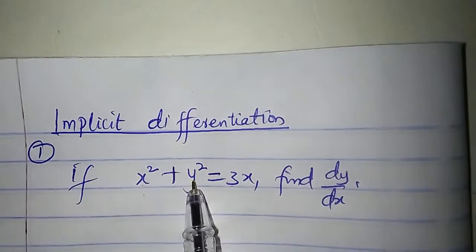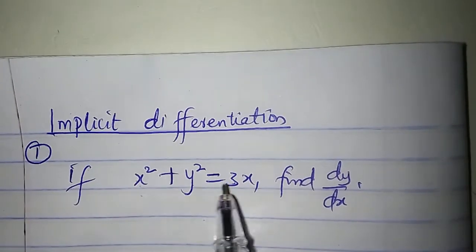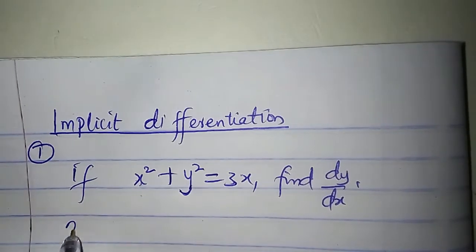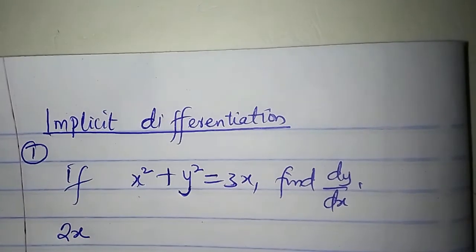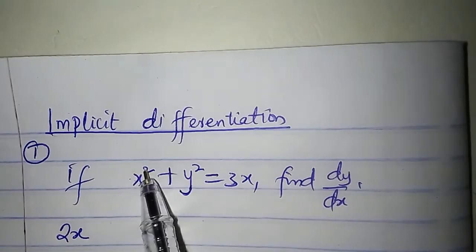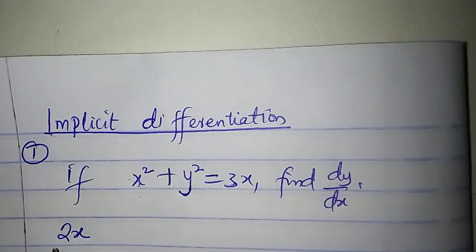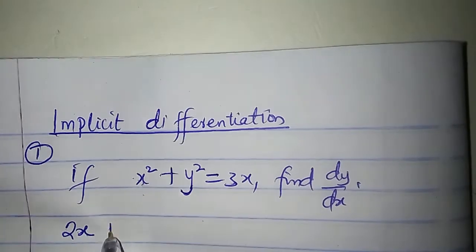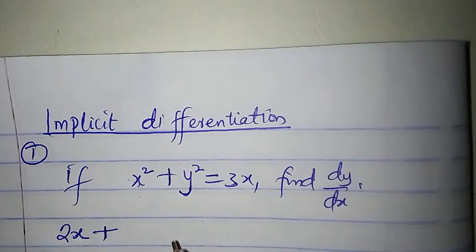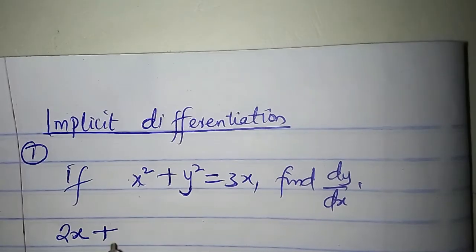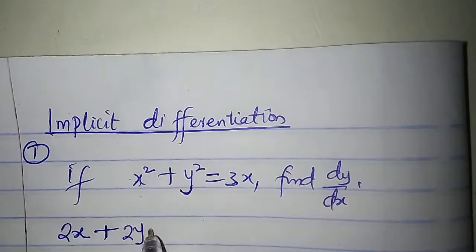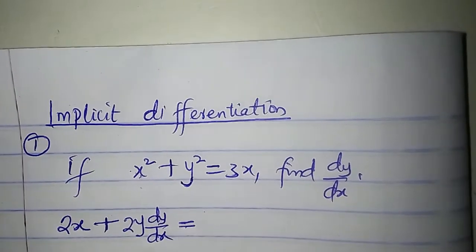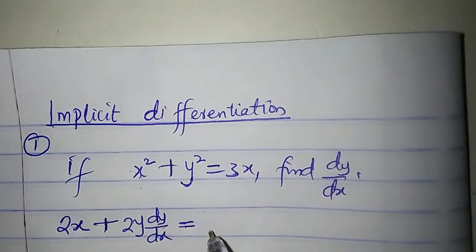I will differentiate each term. Differentiate x squared to get 2x — remember, 2 times 1 is 2, and 2 minus 1 is 1. So we have 2x, plus differentiate y squared, which gives 2y times dy/dx, which is equal to differentiate 3x, giving 3.